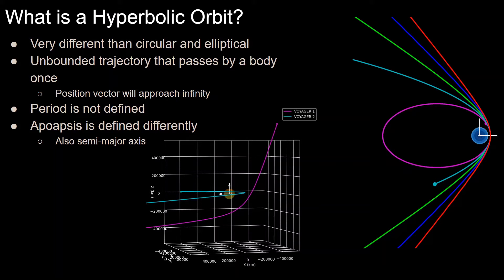And because this trajectory is unbounded, and in the two-body problem, all that exists in the universe is a spacecraft in the central body, the spacecraft will continue on its trajectory until infinity, so it will never come back. So one of the things that comes from this is that the orbital period is no longer defined, since the trajectory does not repeat itself.